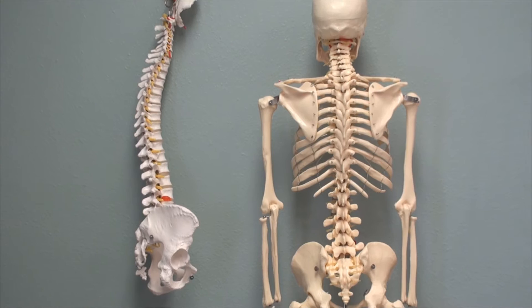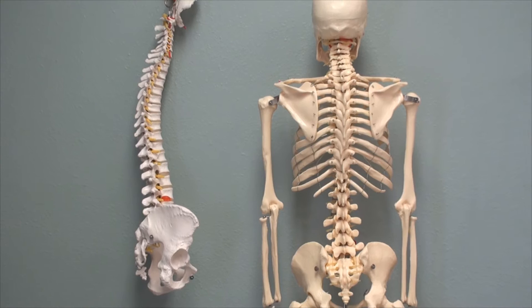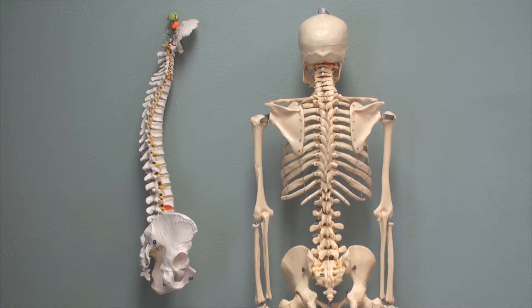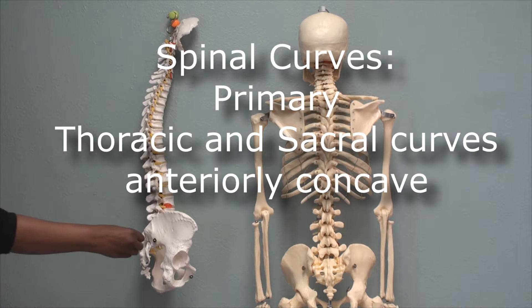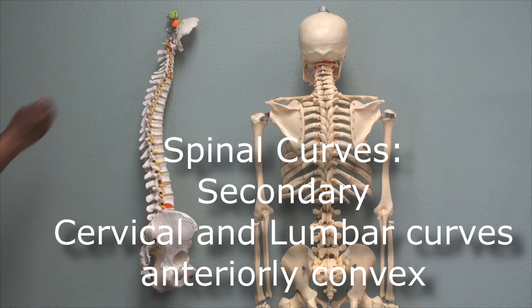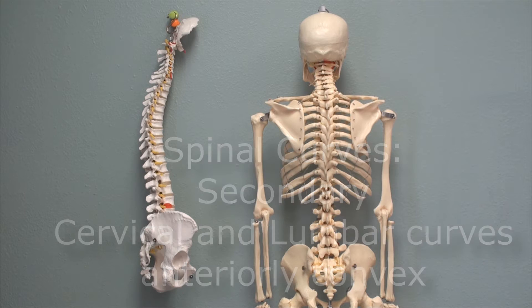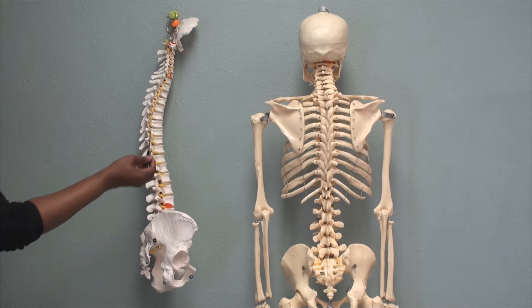Now the next thing we're going to talk about is primary curves and secondary spinal curves. The primary curve is made of the thoracic and the sacral vertebrae. The secondary curve is made of the cervical and the lumbar vertebrae. The primary thoracic and sacral curves are anteriorly concave — they're caved in.